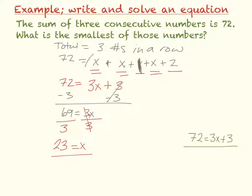Well, we said X was our smallest number, and then we added numbers onto it. So since X is our smallest number, then to find the smallest of those numbers, X equals twenty-three.